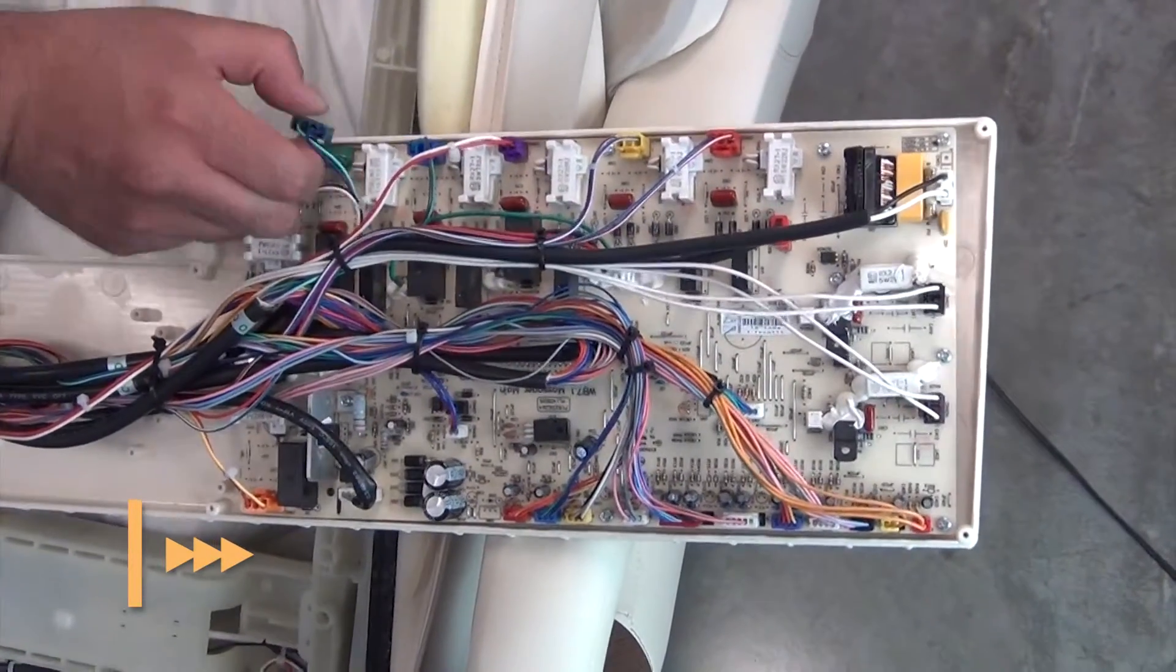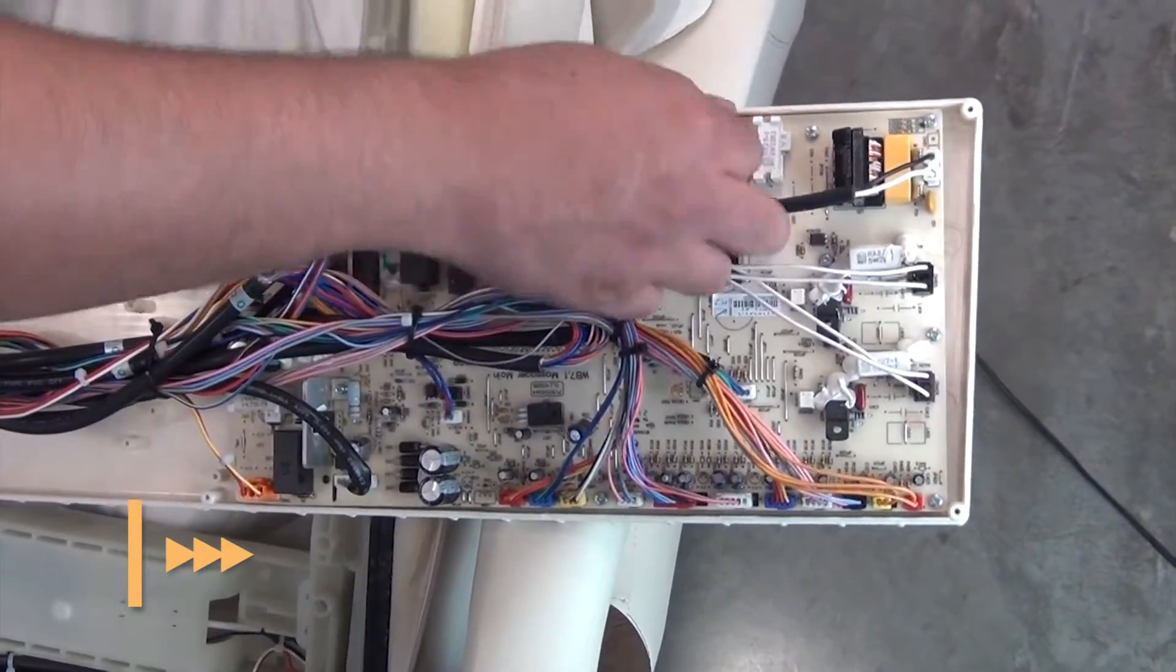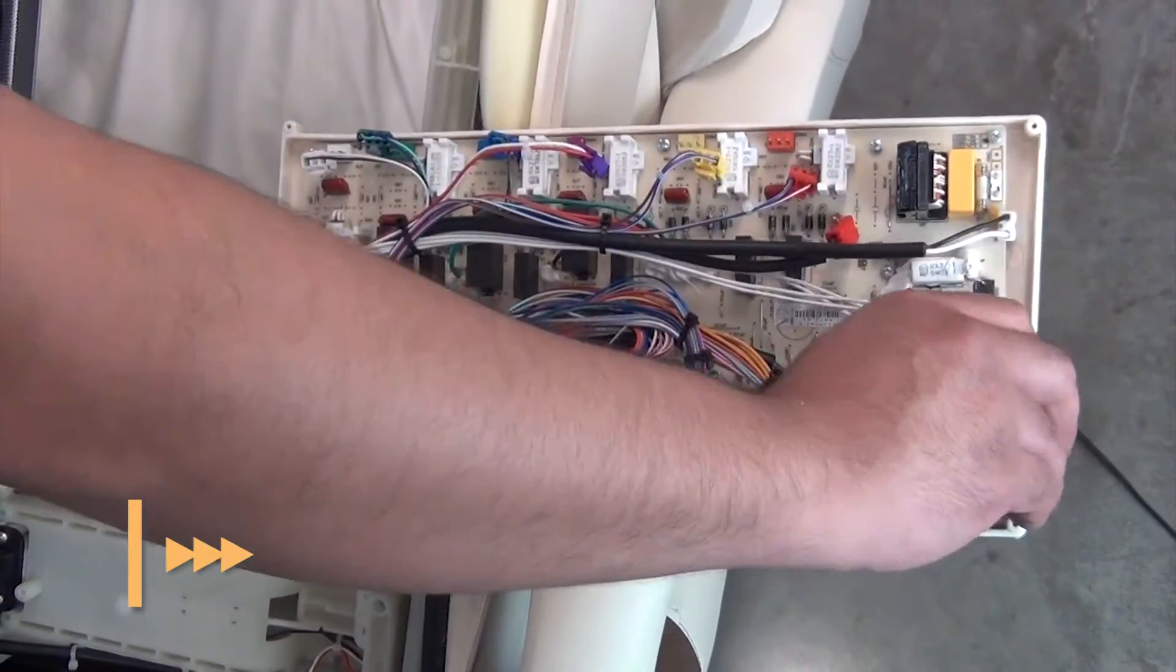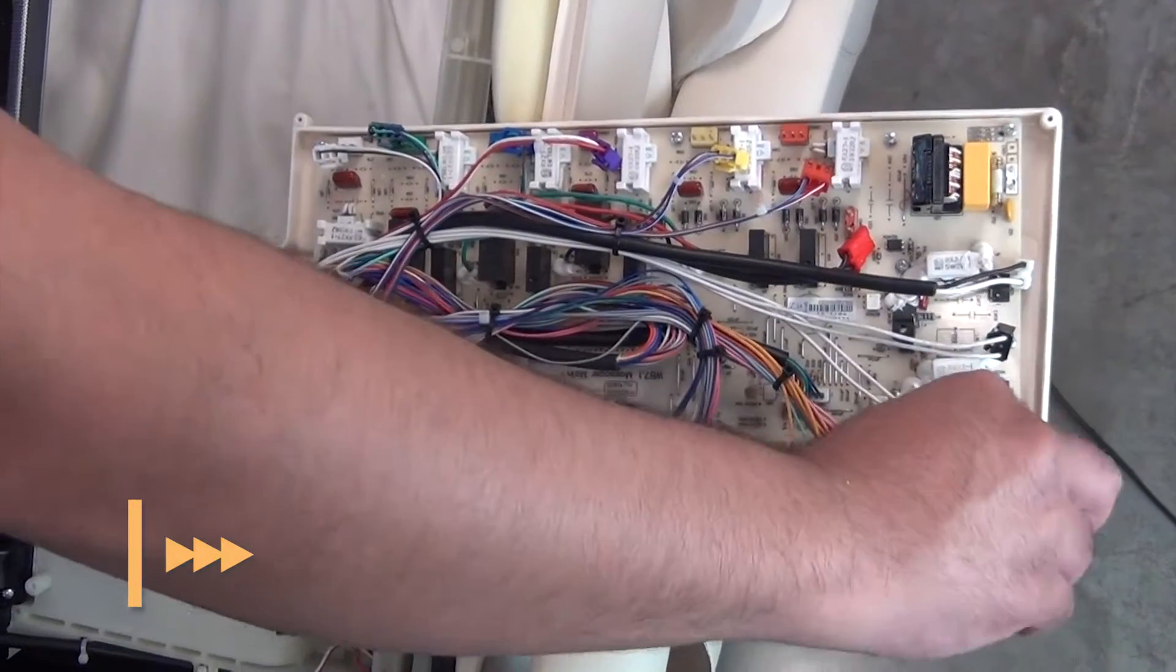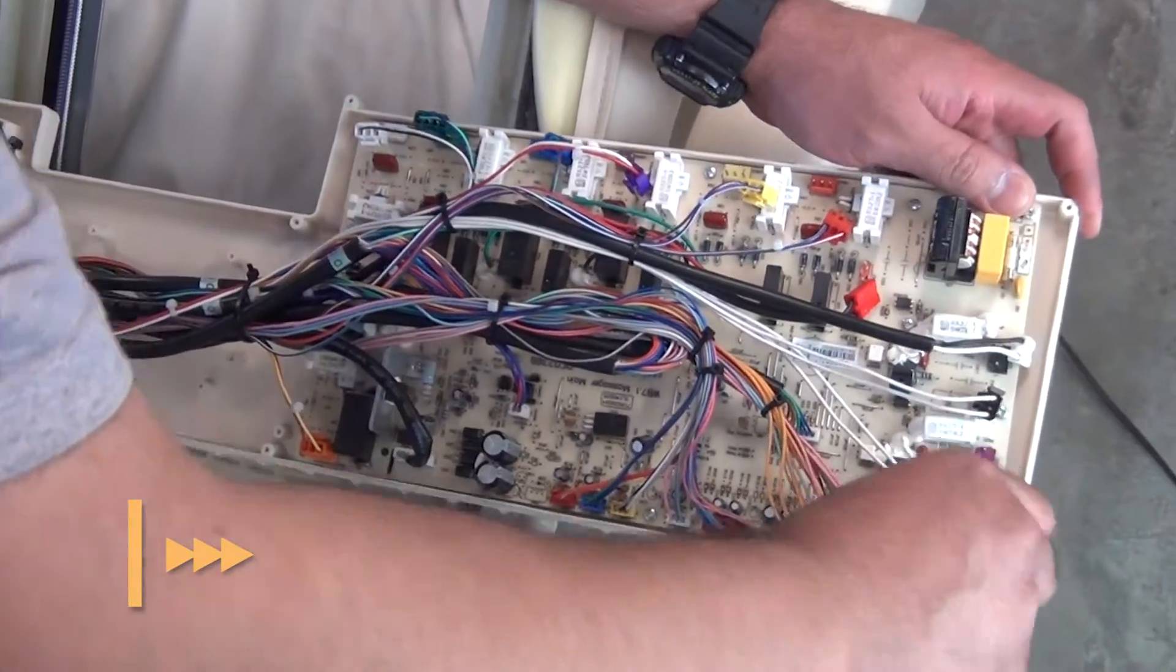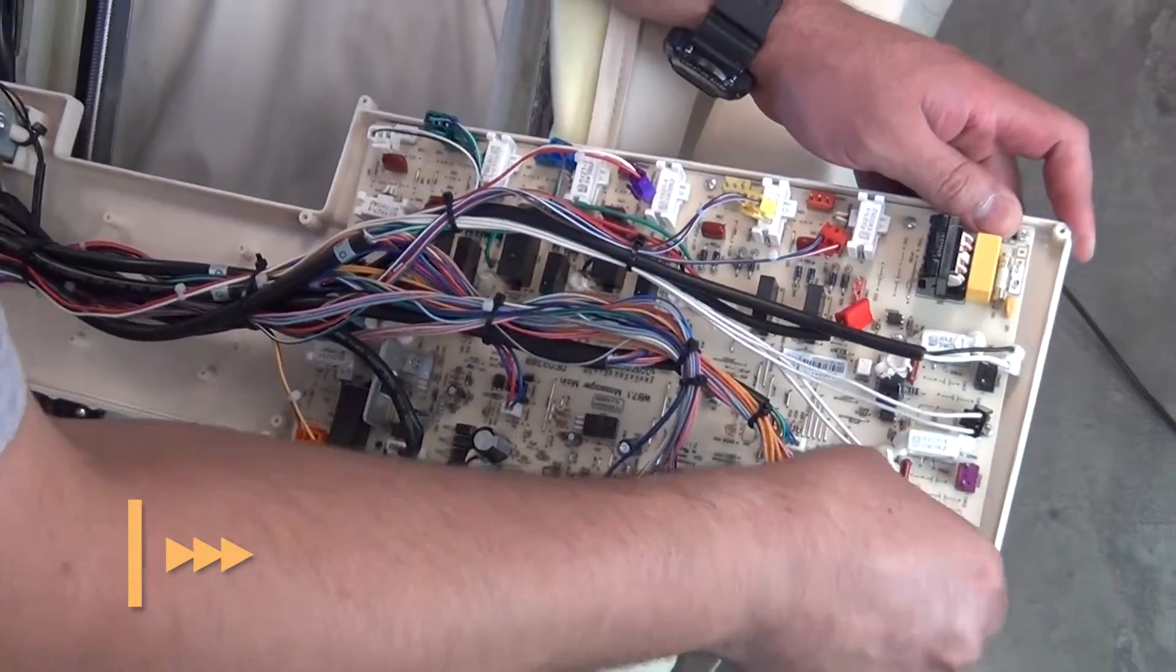Disconnect each of the connectors from the main PCB, cutting the one zip tie that connects the cable bundle to the main PCB cable. You may have to pull very firmly on some of the connectors to disconnect them.